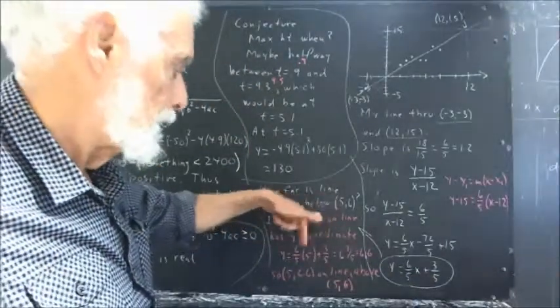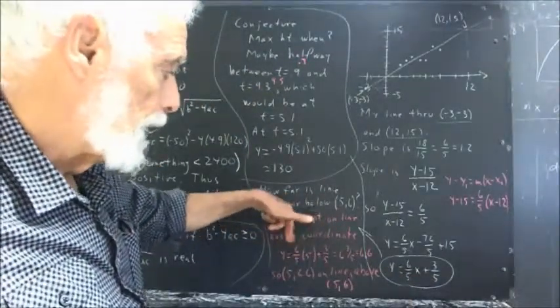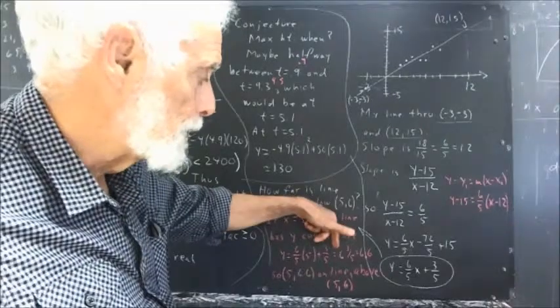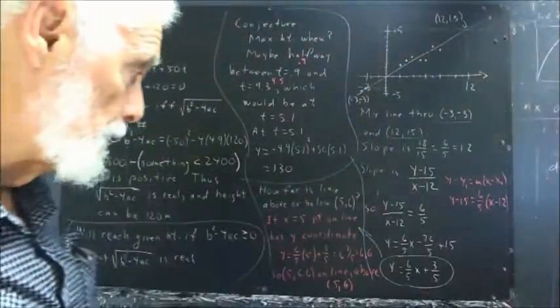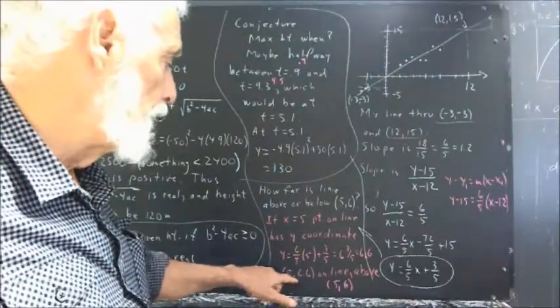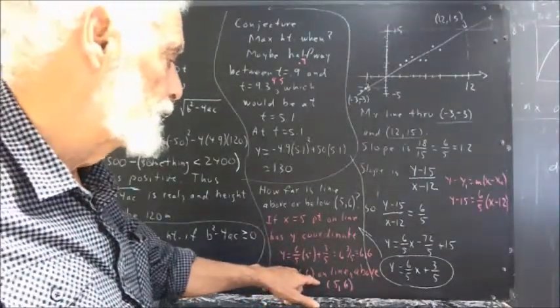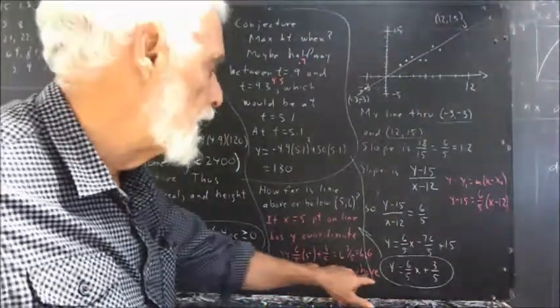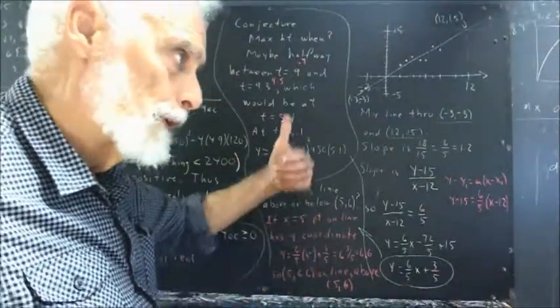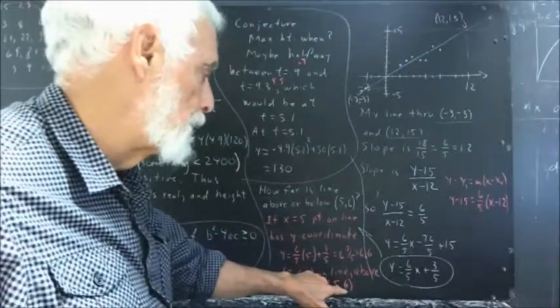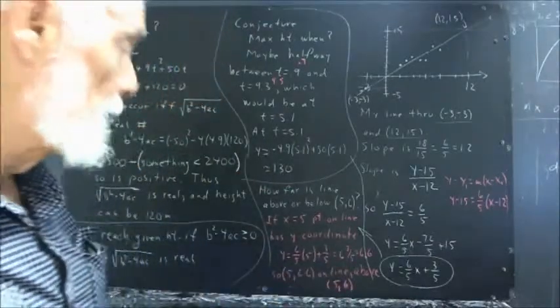And that equals, very easily, 6 fifths of 5 is 6 plus 3 fifths, which is 6 and 3 fifths, or 6.6 if you want to do it in decimal form. So the point 5, 6.6 is on the line and above 5, 6 because 6.6, the y coordinate, puts that above the point with y coordinate 6.